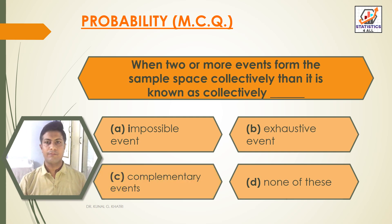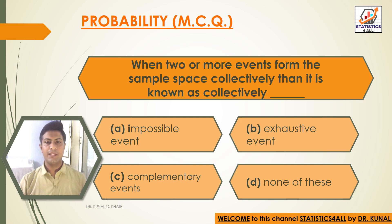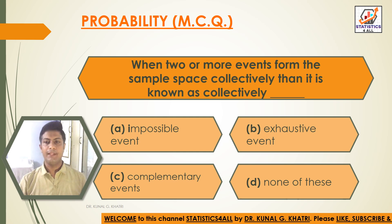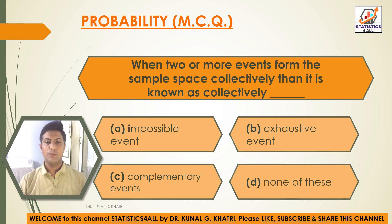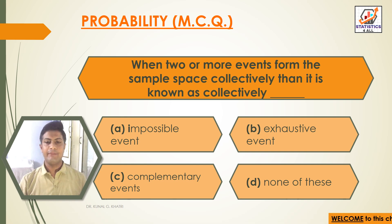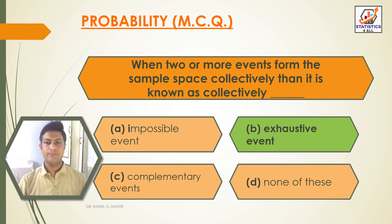Next question: when two or more events form the sample space collectively, then it is known as — Option A: impossible event. Option B: objective event. Option C: complementary events. Option D: none of these. The answer is Option B — objective event: when two or more events form the sample space collectively.